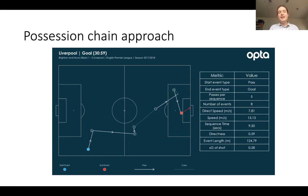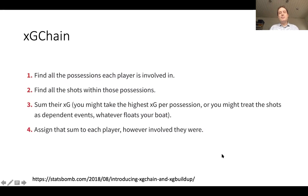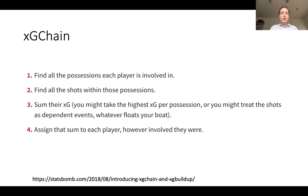It's become a very common way to see different goals visualized in terms of the possession chain that led up to them. StatsBomb developed a very nice way of measuring this called XG Chain — or rather, measuring the chain itself. Given that you have a chain, how can you attribute value to the players' actions who are working within that chain? What they do is the following: they find all the possessions each player is involved in, find all the shots within those possessions, then sum up expected goals for each of those shots.